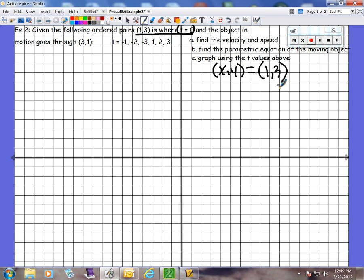1, 3, because that's the ordered pair where t is 0. I just pointed it out to you. Then, remember, it's plus t times the direction vector. You've been finding the direction vector for a whole week now. How have we been finding the direction vector? Subtracting backwards, right? So this is the initial point, and it's going through (3,1). So we need to subtract backwards. So 3 minus 1 for the x's. 1 minus 3. Negative 2, right?